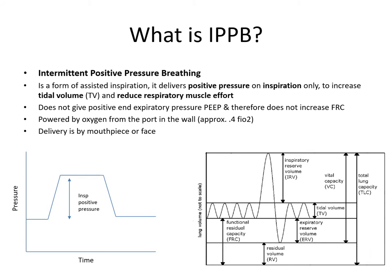Let's remind ourselves what IPPB is — Intermittent Positive Pressure Breathing. This is a form of inspiration delivered through positive pressure on the in-breath, impacting on tidal volume and reducing respiratory muscle effort. It's different to PEEP and doesn't influence FRC. With the Bird specifically, it gives us 40% oxygen from the wall and can be delivered through a mouthpiece, or sometimes a face mask, although most of the time we use a mouthpiece. As you can see demonstrated from the graphs, it influences tidal volume and not FRC, which is directly related to PEEP.